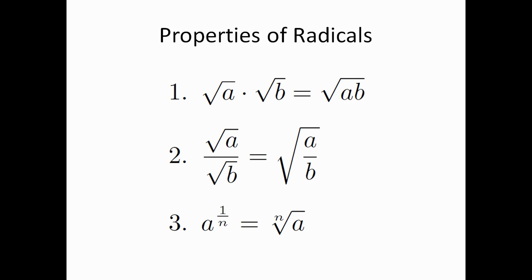The third property says that A to the 1 over N power is equal to the Nth root of A. For example, 25 to the 1/2 power equals the square root of 25, or just 5. The cubed root of 8 can be expressed as 8 to the 1/3 power, which is just 2.